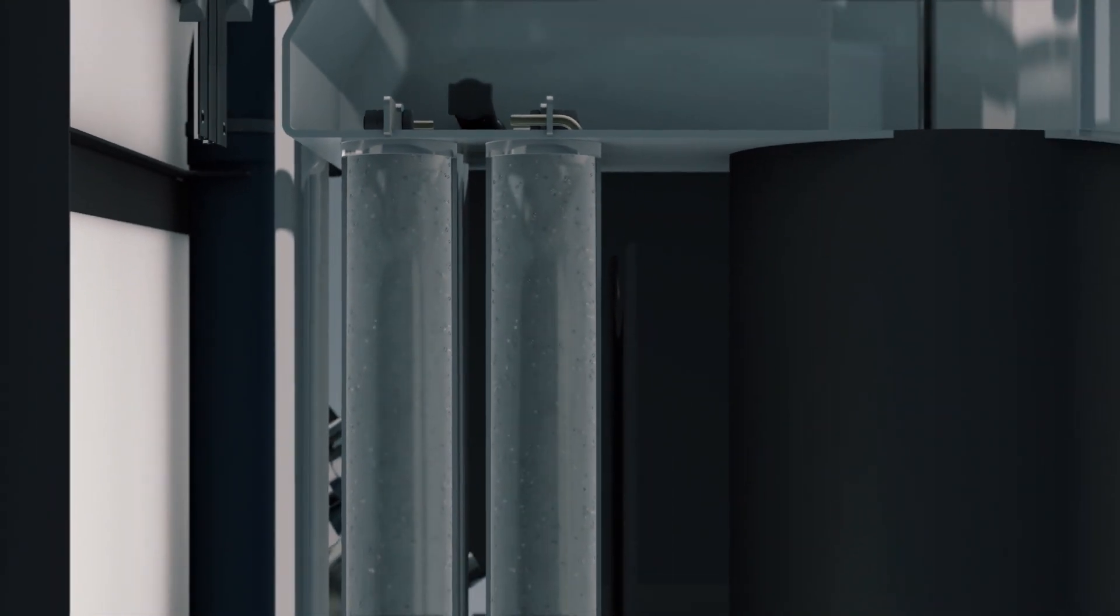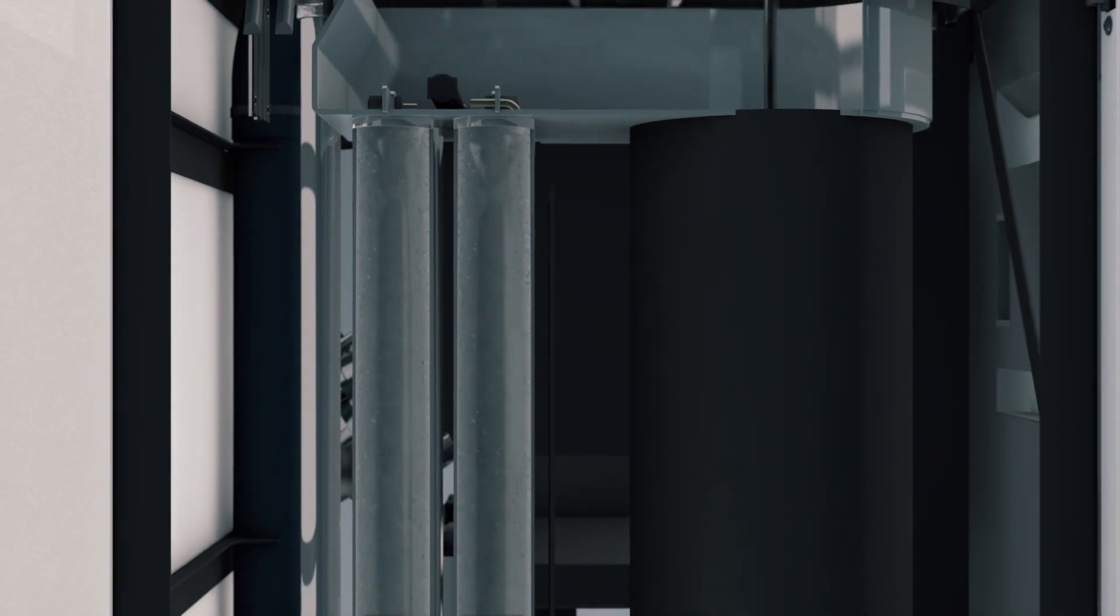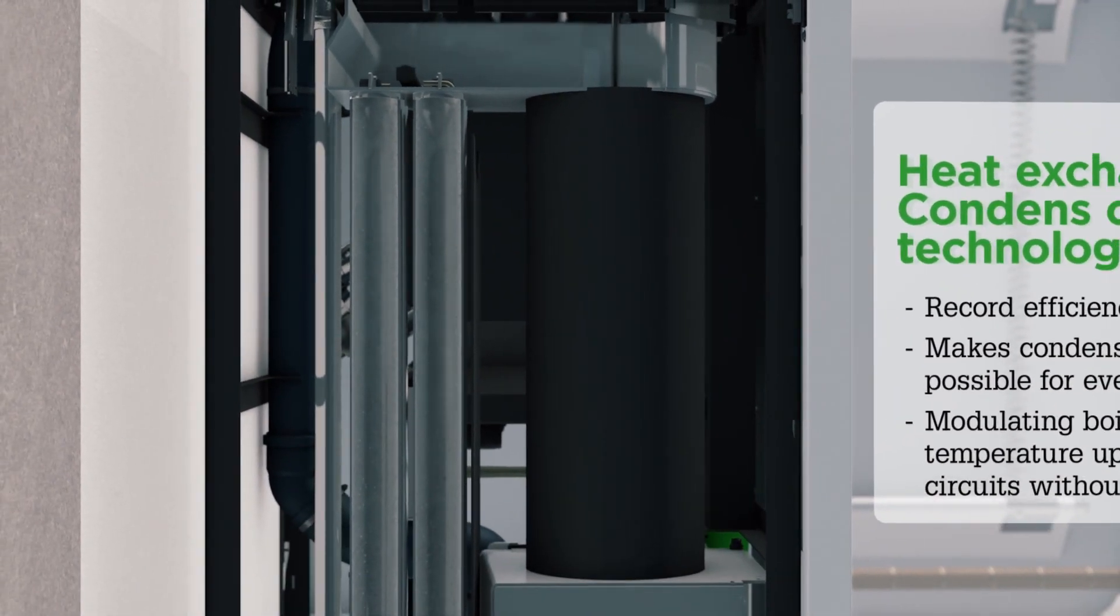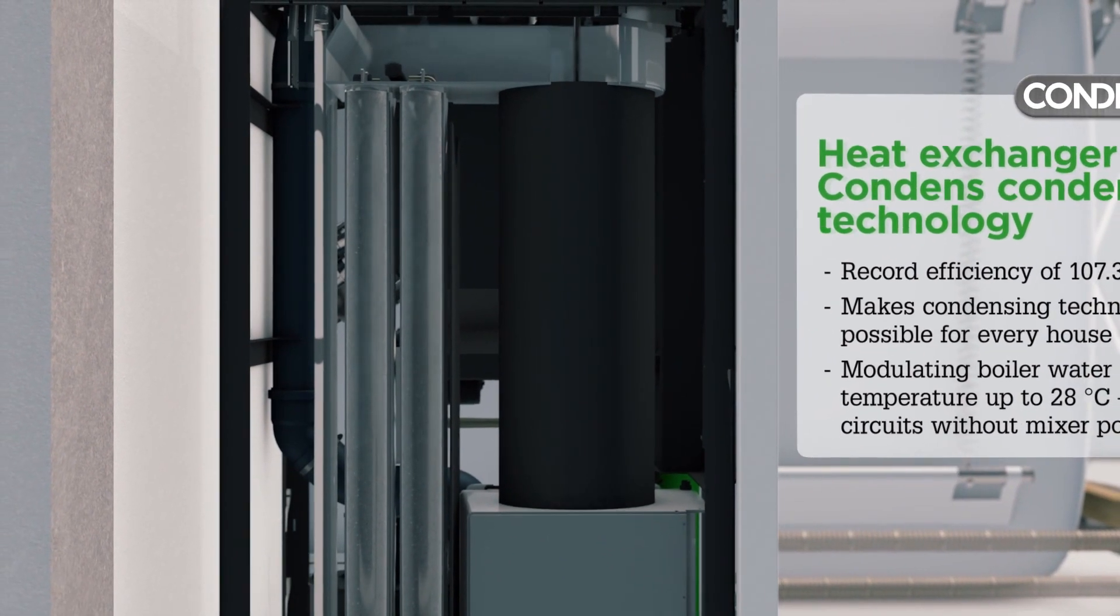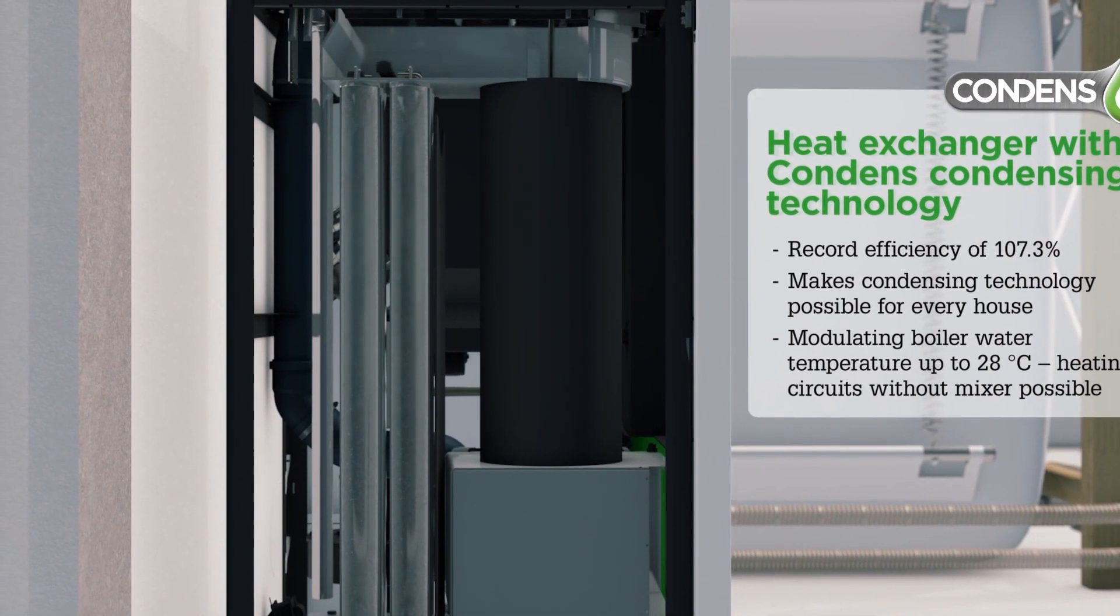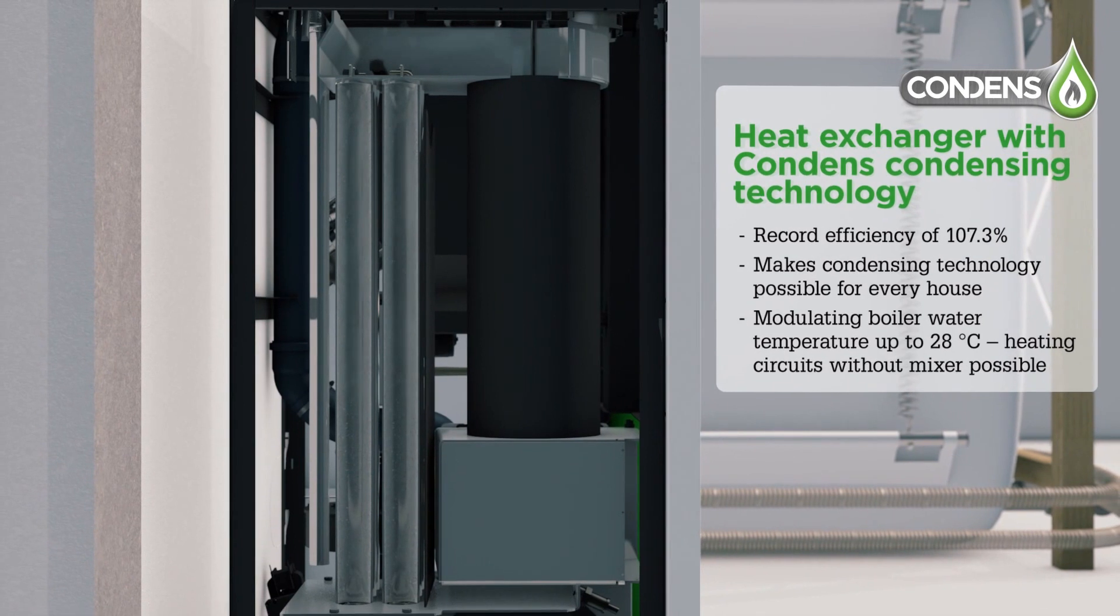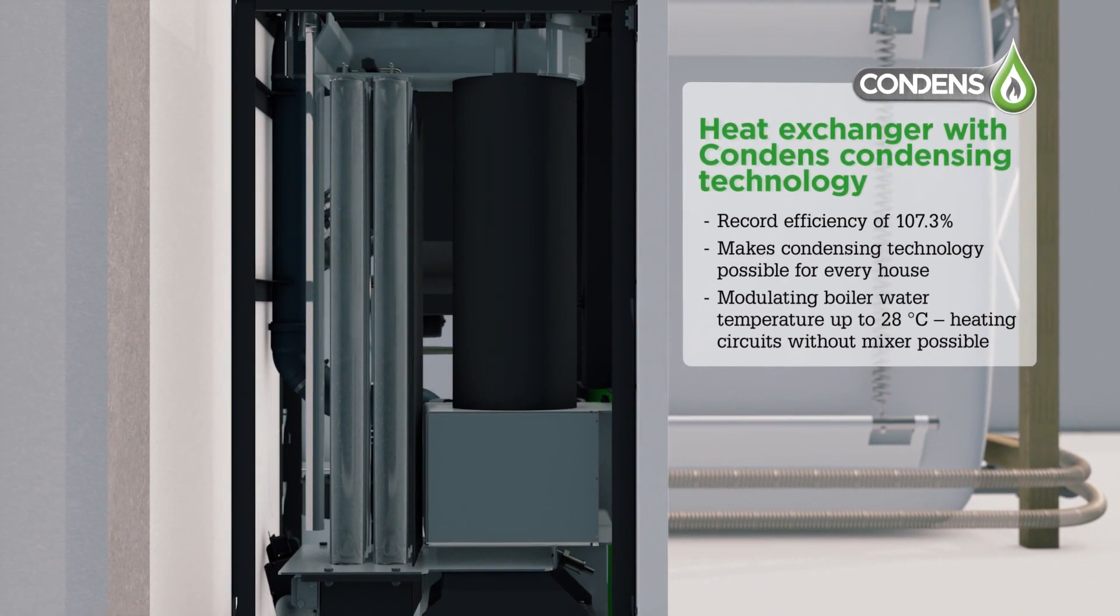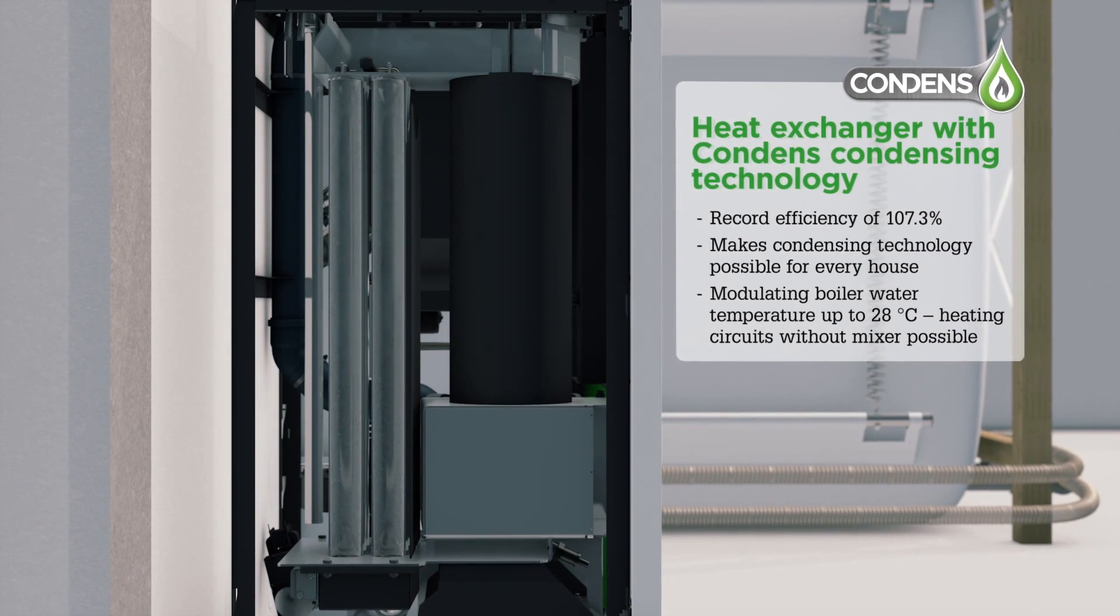For the first time it's been possible to develop a pellet condensing boiler system that can be installed in any house regardless of whether it's equipped with radiators or underfloor heating. The high quality construction in stainless steel enables boiler operation at a temperature of only 28 degrees, thereby allowing radiators to be fed directly with no need for a mixer valve.